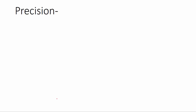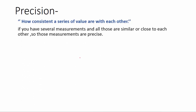What is precision? Precision tells us how consistent a series of values are with each other. In other words, if we take several measurements and they are all similar or close to each other, then that set of measurements is precise, or their precision is good.